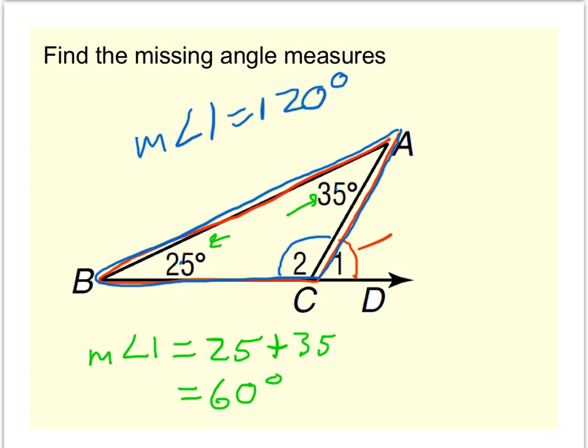Another way, if you want, is to look at angles 1 and 2 together. They form a linear pair. Since angle 1 is equal to 60, I know angle 2 must equal 120, because linear pairs are supplementary. In other words, they form 180 degrees.